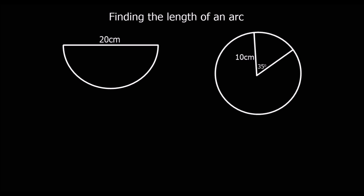In this video we're looking at finding the length of an arc. An arc is part of the circumference of a circle. In this case we've got a semicircle, and the arc is the curved bit — the part that's on the circumference of the circle.